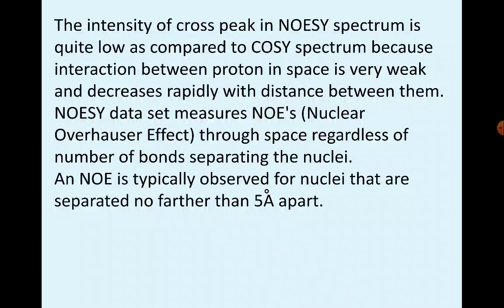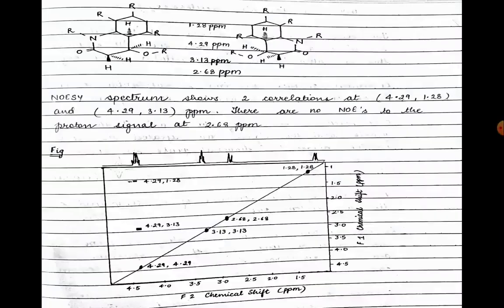NOE is typically observed for nuclei separated by no more than 5 Ångströms. This NOESY spectrum shows two correlations at 4.29/1.28 ppm and 4.29/3.13 ppm, and there are no NOEs to the proton signal at 2.68 ppm. Thank you.